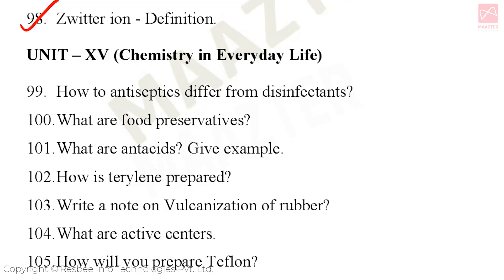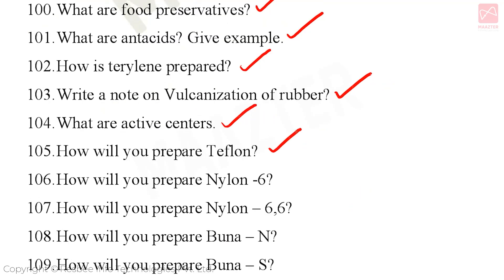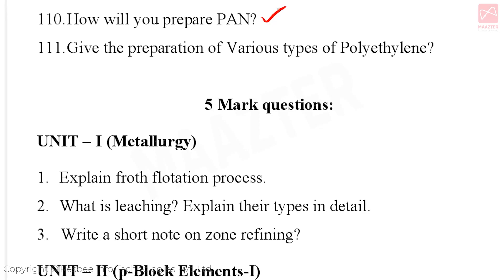Unit 15: Chemistry in Everyday Life. Very important 2-mark and 3-mark questions. How antiseptics differ from disinfectants, what are food preservatives, what are antacids with examples, how aspirin is prepared, write a short note on vulcanization of rubber, what are active centers, preparation of Teflon, Nylon-6, Nylon-66, Buna-N, Buna-S, and PAN. Preparation of various types of polyethylene — very important question.